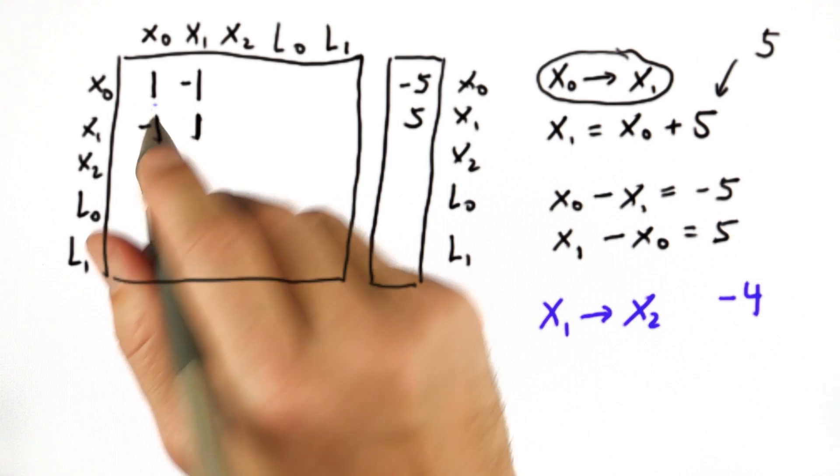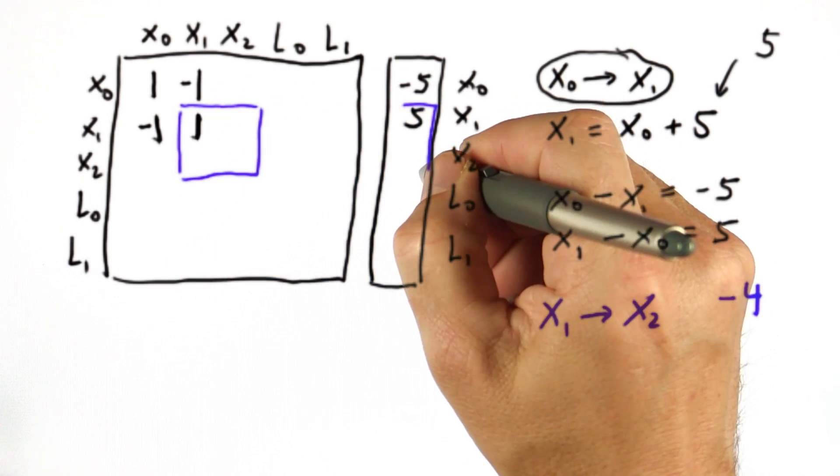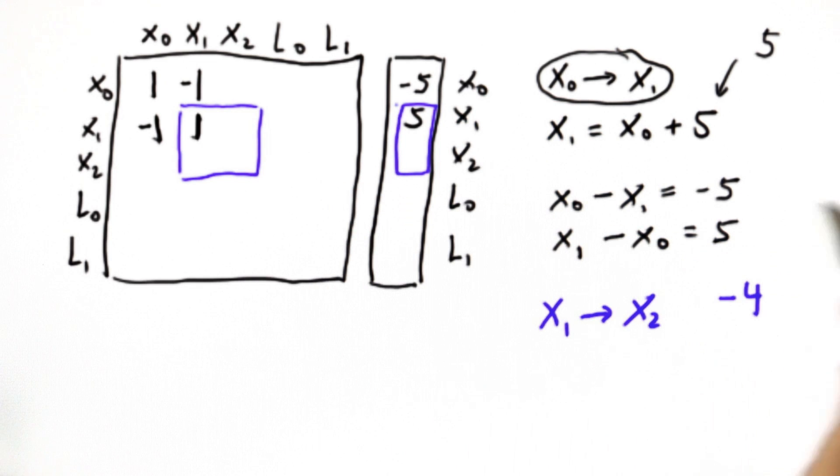What would be the new values for the matrix over here? And I'll give you a hint. They only affect values that occur in the region between x1 and x2 and over here. And remember, these are additive.